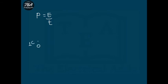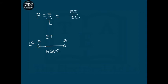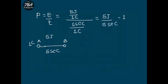Let's understand power with an example. We have 1 coulomb of charge at point A to be moved to point B. The energy required is 5 joules and the time required is 5 seconds. By the definition of power, P = E/T = 5 joules / 5 seconds = 1 watt.